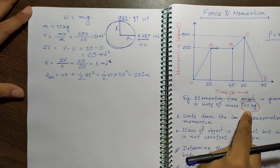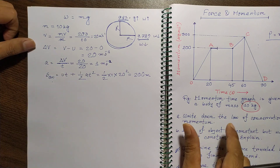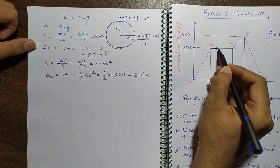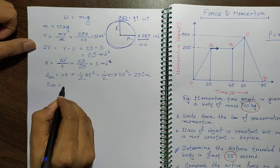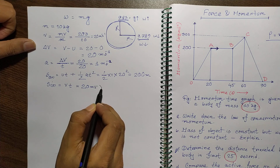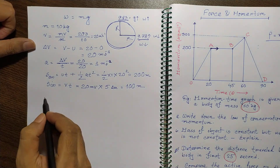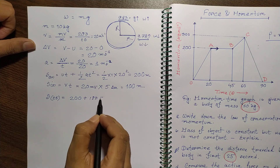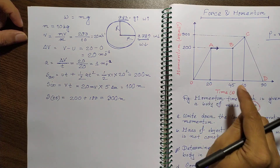The question asks for 25 seconds. After 20 seconds, from the momentum-time graph, the body moves at constant speed — no acceleration. Distance in the next 5 seconds = v × t = 20 × 5 = 100 meters. Total distance in 25 seconds = 200 + 100 = 300 meters.